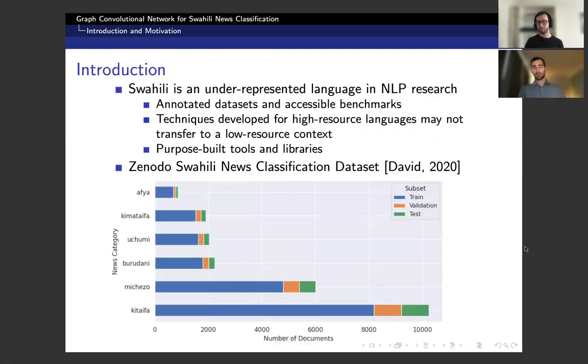Although Swahili is one of the most widely spoken languages, it remains underrepresented in NLP research. This manifests in several ways. Firstly, there's a shortage of annotated datasets and accessible benchmarks, making it difficult to get into the field and build on existing research. Secondly, NLP techniques are generally developed for high-resource languages, so there's uncertainty whether they optimally transfer to low-resource settings. Finally, a shortage of purpose-built tools and libraries for languages like Swahili makes the work more difficult.